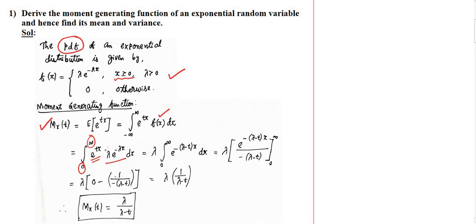Since λ is constant, we can take it outside the integral from 0 to infinity. Taking minus x common in the exponent, we get e^(−(λ − t)x) dx.